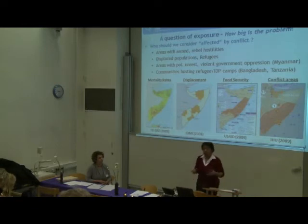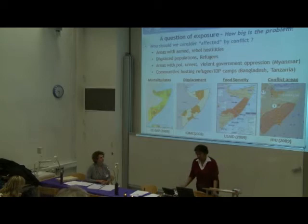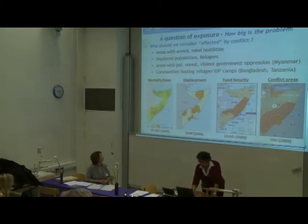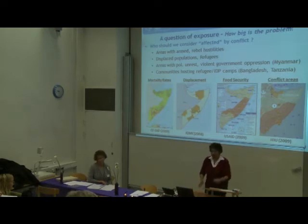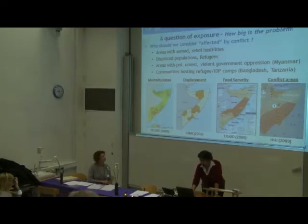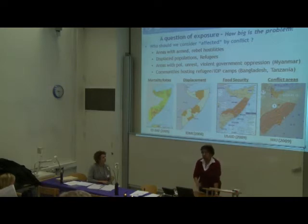Communities hosting refugees also matter — what about the poor villages in Chad receiving Darfuri arrivals? Are they considered affected? Here are different maps for Somalia using different criteria: one shows affected areas by livelihood groups with mortality data, another shows displacement with deep orange areas indicating where displaced people are. A food security map from USAID shows the centre of Somalia largely affected, while an HRU conflict map shows hostility areas and pirate attacks in the sea as blue crosses. Each organization's definition of 'affected area' differs, so affected-by-conflict needs a systematic definition.